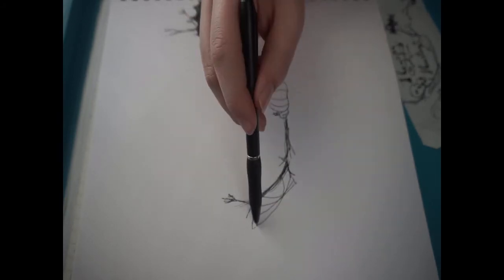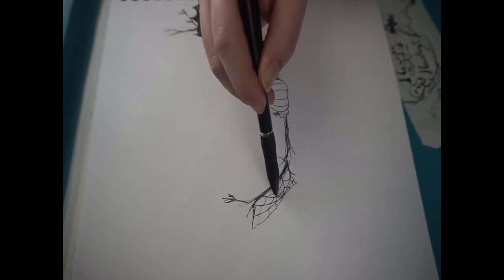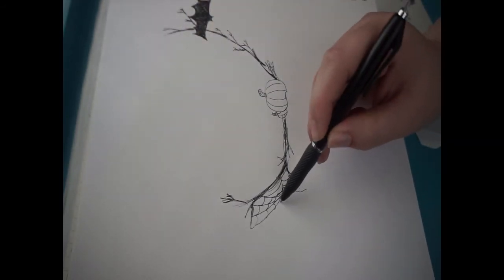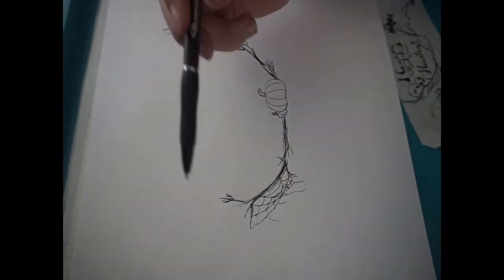If you want it to look this way, it looks very spindly, it looks very barren, very end of October, beginning of November, all the leaves are gone kind of look.